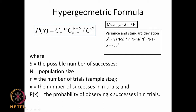The mean is given by mu = n·S/N, where n is your sample size, capital N is the population size, and S is the maximum possible number of successes. The variance is given by S·(n−S)·n·(N−n) / (N²·(N−1)). This is the mean and variance of the hypergeometric distribution.